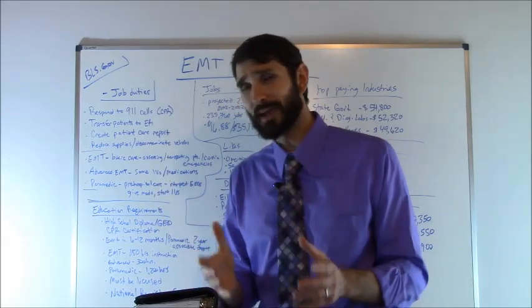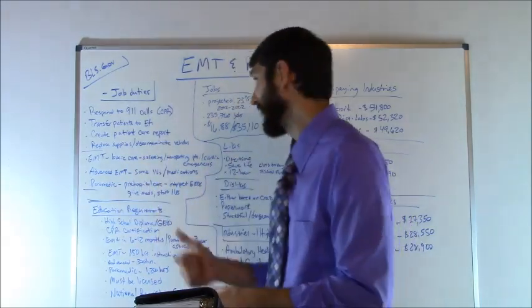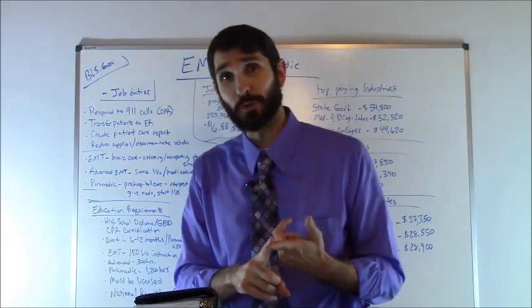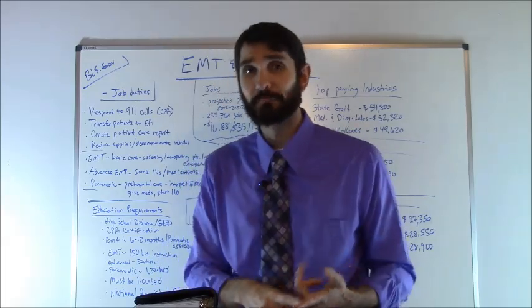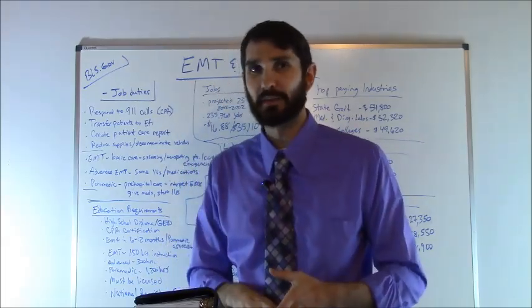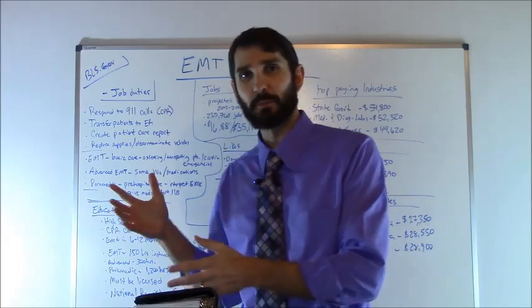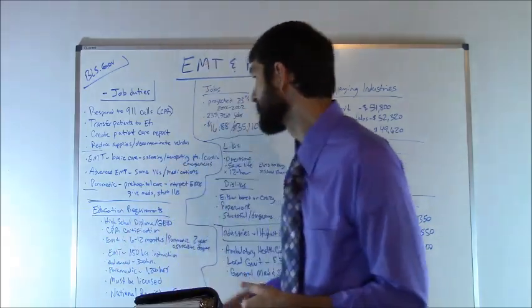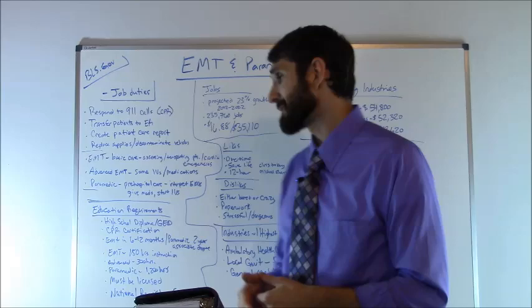Now what do you have to do if you want to become an EMT or paramedic? First of all, you have to have your high school diploma or GED equivalent, and you also need CPR certification. That will sometimes be provided along with the training, but that's really important. It usually takes about 6 to 12 months to become an EMT entry level or EMT basic.